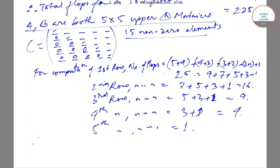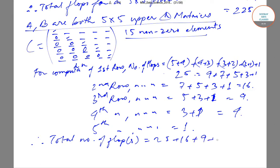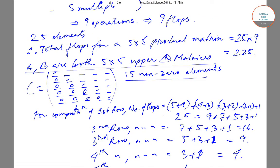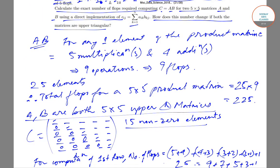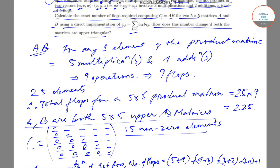Therefore the total number of flops will be equal to 25 + 16 + 9 + 4 + 1 = 55 operations when both matrices are upper triangular. This is how you proceed with the formulation for finding the number of flops. If you have any doubt regarding the process, comment below and we'll try to get back to you. Thank you very much.